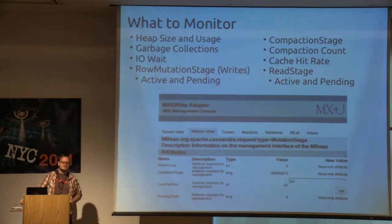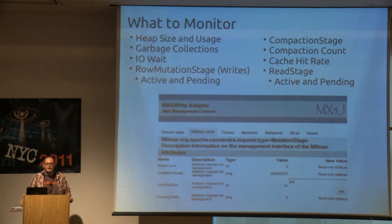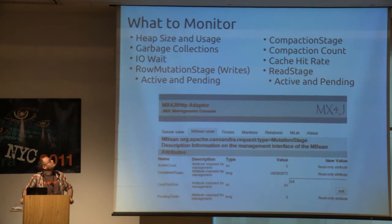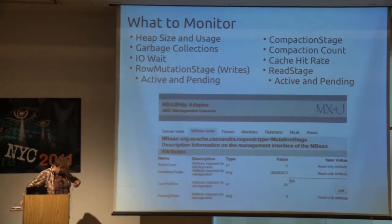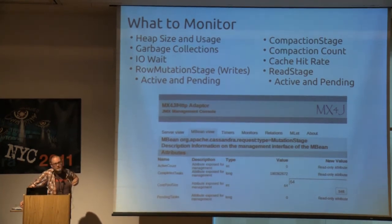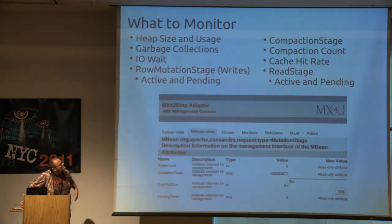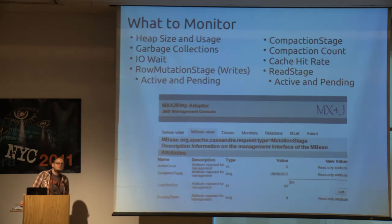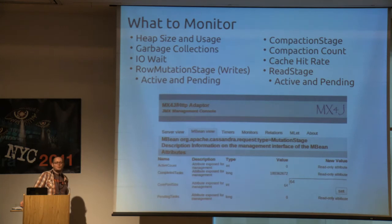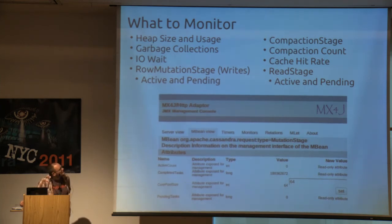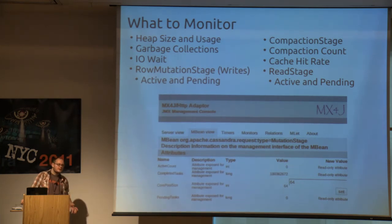Things you want to monitor: garbage collection, row mutations (just another term for writes), compaction information, cache information, and read information. In 0.8 you don't have the 1.0 read performance improvements, so sometimes you'll see writes back up. If you see your reads starting to back up, either upgrade to 1.0, remodel your data, add more nodes, or change your access pattern.